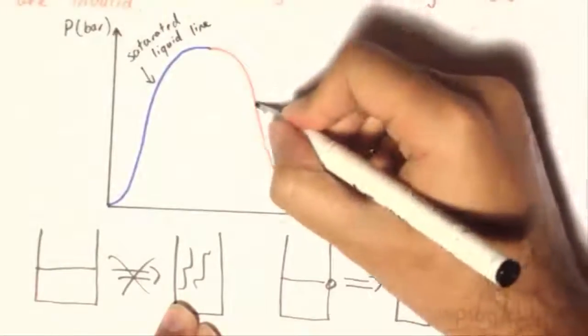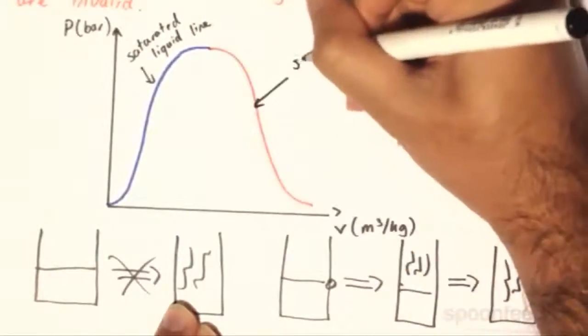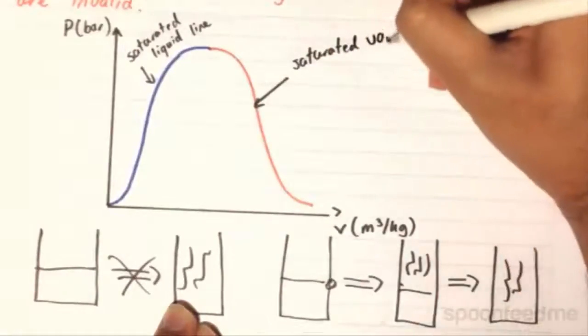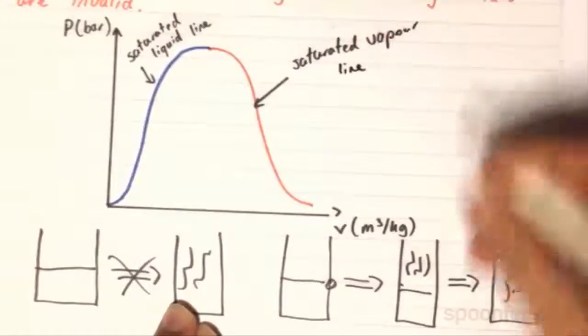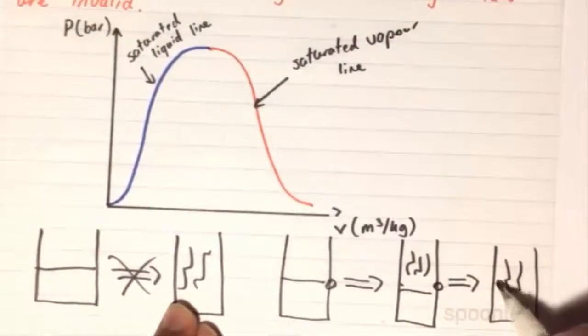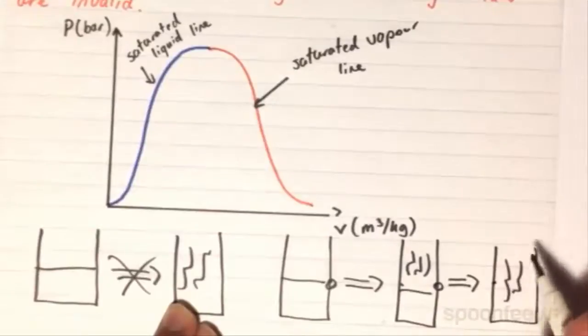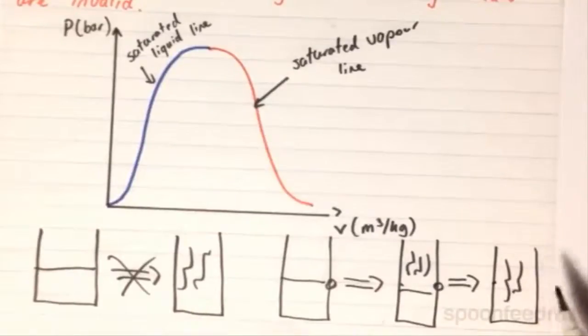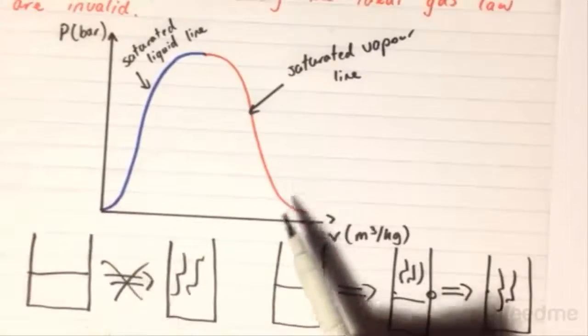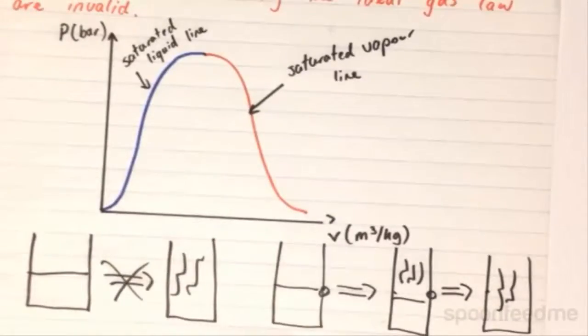And conversely, this is the saturated vapor line. As you probably would have guessed, this is when the substance or the water goes from here to this full state of vapor. This should make relative sense, as the volume increases, you expect it to be a gas.